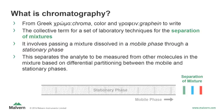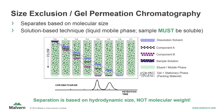What's unique about GPC and SEC? Size exclusion chromatography separates analytes based on their size. SEC is a solution-based technique, which means it uses a liquid as the mobile phase to carry the analytes through the chromatography column. As the mixture of analytes travels through the stationary phase of the column, the sample components are separated according to molecular size, with larger molecules eluting first. It is important to remember that separation is based on hydrodynamic size, not molecular weight.